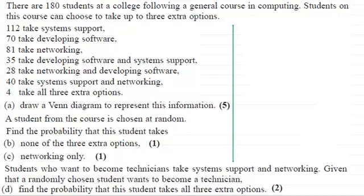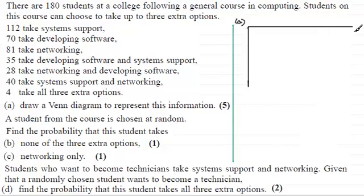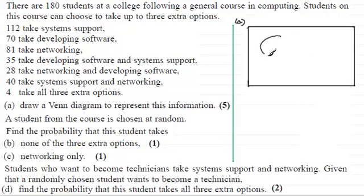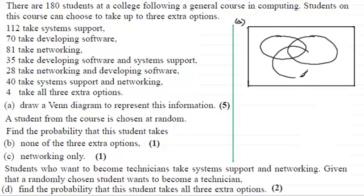Welcome back. For part A, all we need to do is set up a rectangle or some kind of border surrounding our sets. We've got three sets here that we need to represent, so we'll have shapes like this just overlapping.